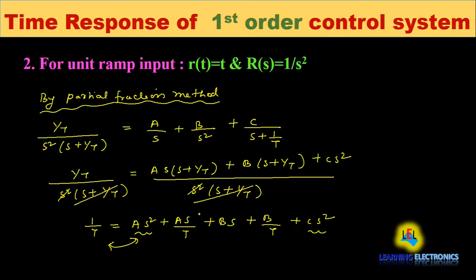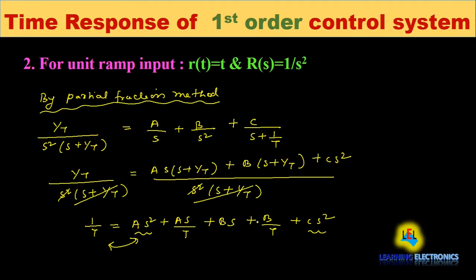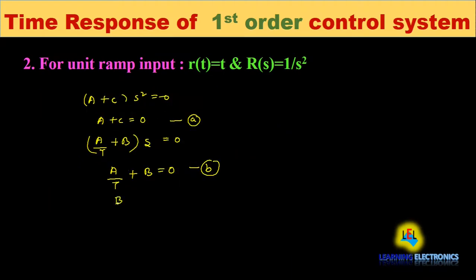For the coefficient of s: on the right-hand side we have A/T and B, but no s term on the left-hand side, so A/T + B = 0. Let this be equation (b). For s⁰: we have B/T on the right and 1/T on the left, so B/T = 1/T. The T's cancel and we get B = 1.